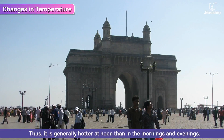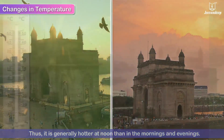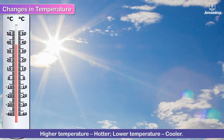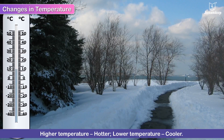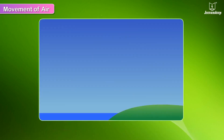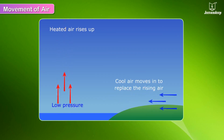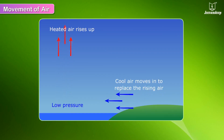Thus it is generally hotter at noon than in the mornings and evenings. The higher the temperature, the hotter it is, and the lower the temperature, the cooler it is. Air pressure is the weight of air as experienced from all directions. On land, when air heats up it rises and creates an area of low pressure on the Earth's surface. The surrounding cool air moves in to replace this rising air, coming from areas where the pressure is high.